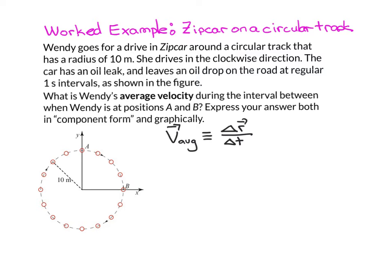Let's start with the numerator. The change in position, delta R, by definition is just the difference between the final position, which is the position when the zip car is at point B, minus the initial position, its position vector when it is located at point A.